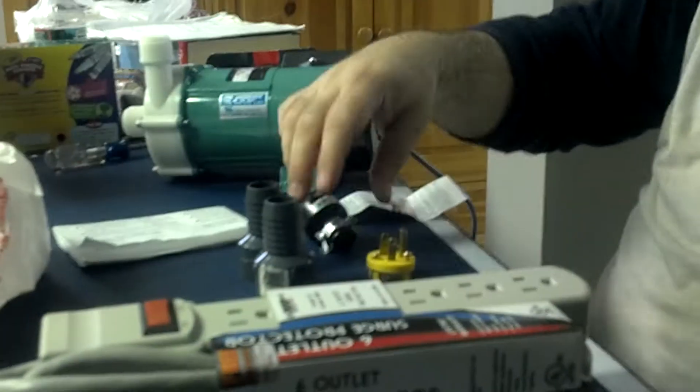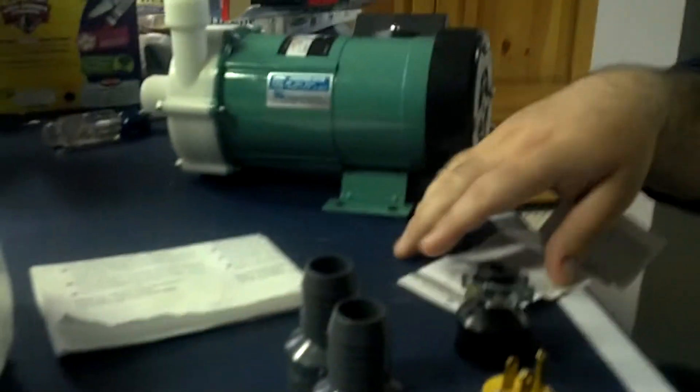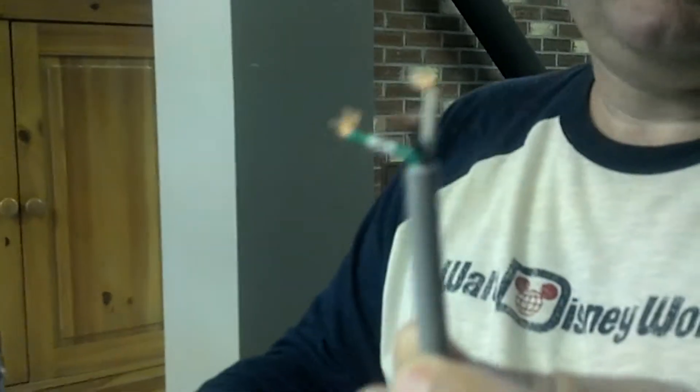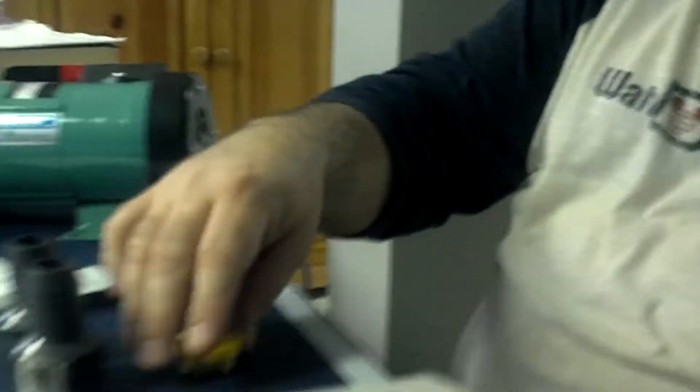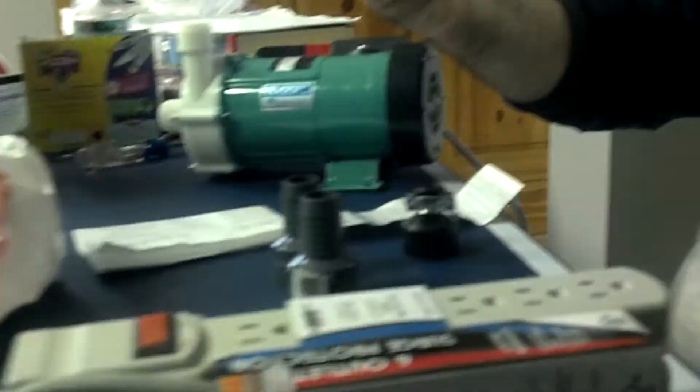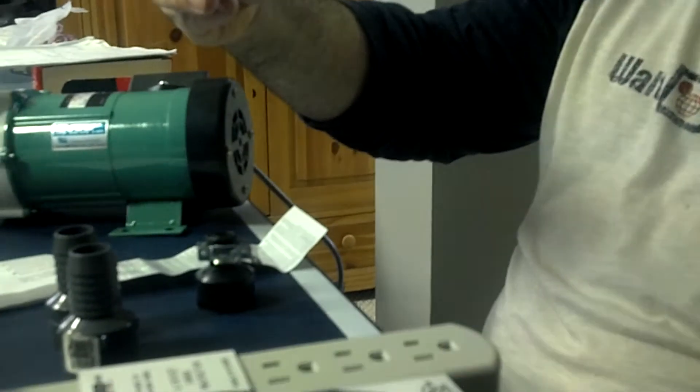We have a plug right here and we're going to wire it up. To be honest, I've never done this before, but it looks really simple. There's three wires: hot, neutral, and ground. The neutral goes to the silver, the hot goes to the brass, and the ground is green.